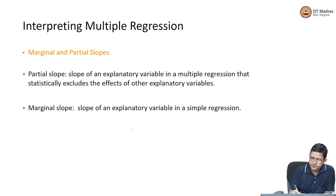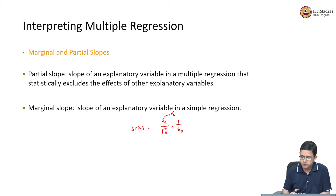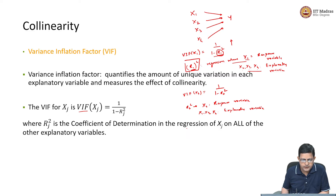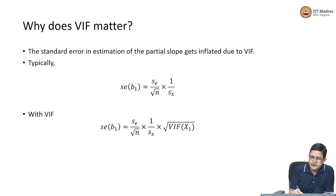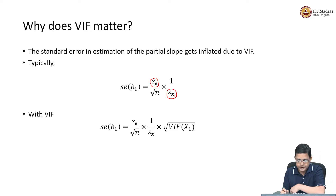How are these standard errors calculated? The standard error in estimating B1 is given by the standard error of the error terms divided by the square root of n, multiplied by 1 over the standard deviation of x1. Similarly, the standard error in estimating B2 uses the standard deviation of x2 in the denominator.